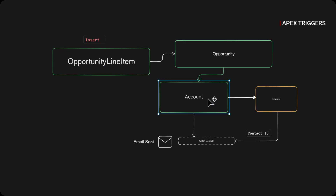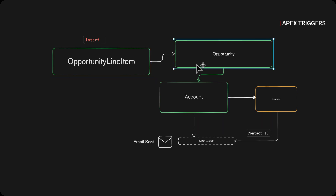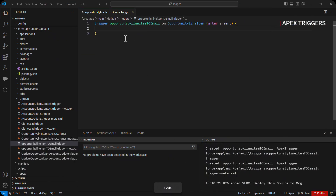When the opportunity line item is inserted, each opportunity line item is connected to an opportunity. From the opportunity there is an account ID, and each account has a contact. We have created a custom field called client contact on the account, where we pass the contact ID of that account's contact. When the opportunity line item is inserted, it will check the account ID via the opportunity object, fetch the account ID, and then send an email to the client contact.